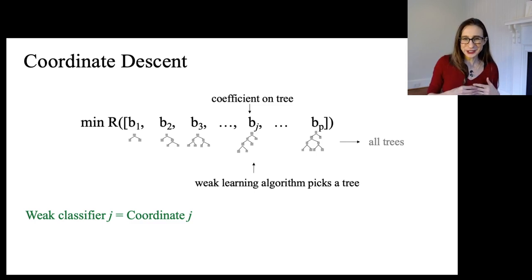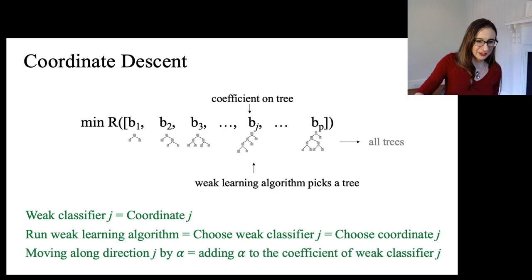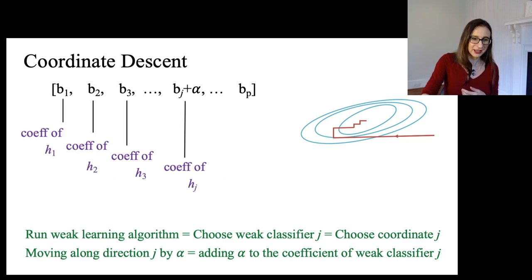So I have all this terminology fused in my head because I think about AdaBoost as a coordinate descent method. I did my PhD on this topic, so I think about these things together in the same way. So when I say weak classifier J, I mean coordinate J in this space of weak classifiers. And then when I say run the weak learning algorithm, I mean choose a weak classifier. And if I'm choosing weak classifier, that's a coordinate in this space. And then when I say I'm moving along direction J by a distance alpha, I mean adding alpha to the coefficient of weak classifier J.